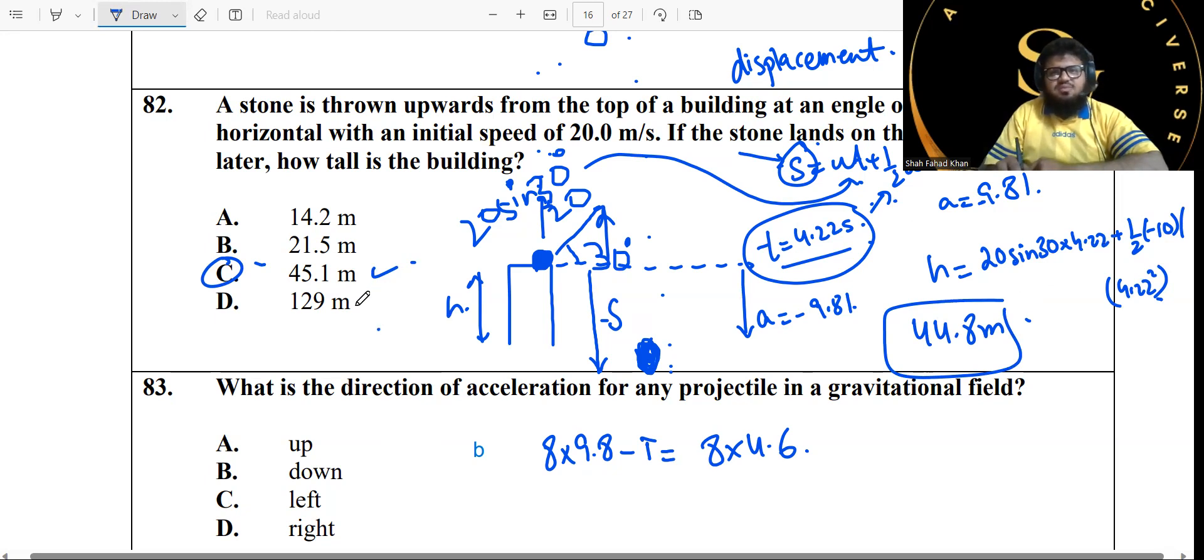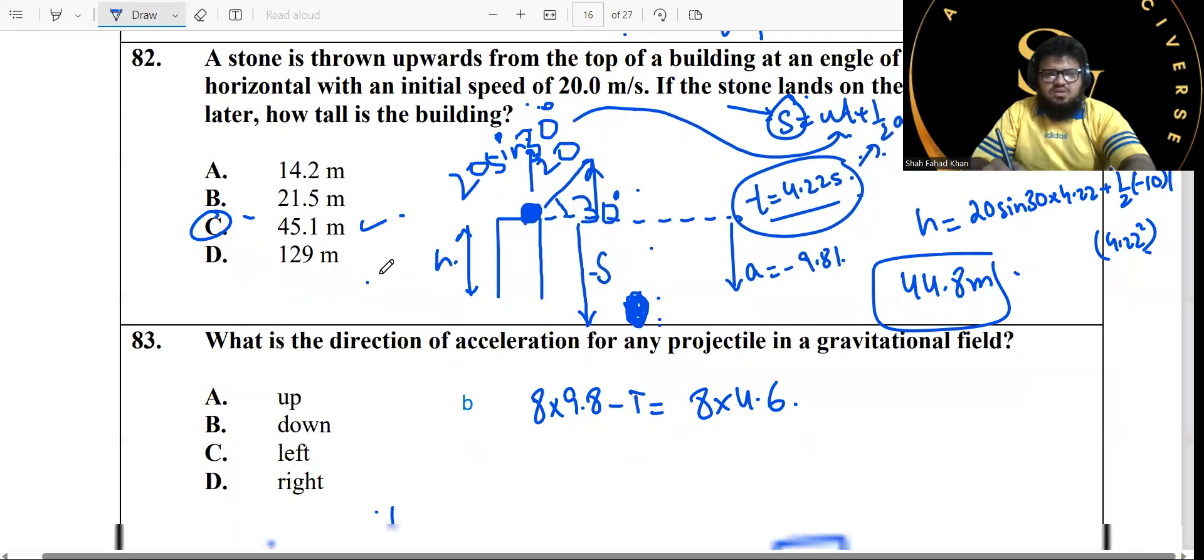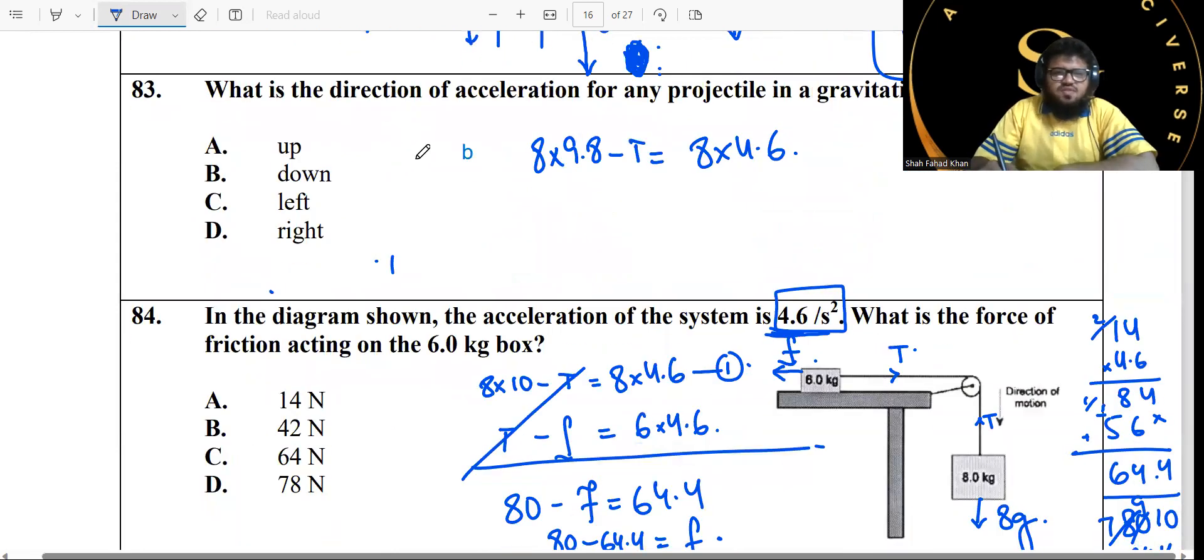Problem 83: What is the direction of acceleration for any projectile in a gravitational field? This same concept was applied in the problem we just did. The direction of acceleration is always downward due to which acceleration is negative 9.81. Throughout the motion it's always going to be in the same direction, it's never changing because it's always downwards, negative downwards.